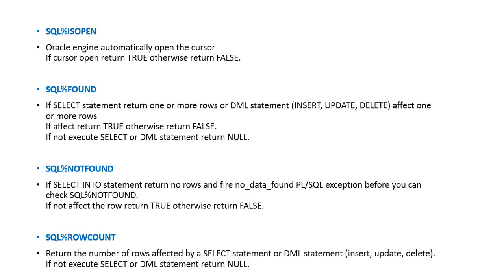The first attribute I am going to use today is SQL%ISOPEN. The Oracle engine automatically opens the cursor. If the cursor is open, it returns true; otherwise it returns false. Suppose you execute some update statement — attributes like SQL%FOUND, SQL%NOTFOUND, and SQL%ROWCOUNT always return some value, but what happens to SQL%ISOPEN? It always remains closed and always returns false.